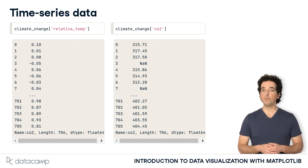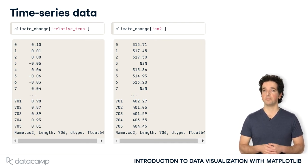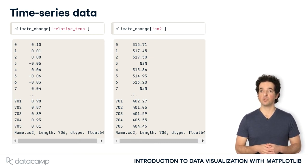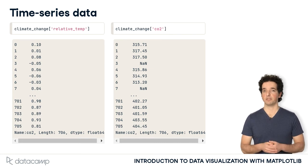There are a few points in the CO2 data that are stored as NaN, or not a number. These are missing values where measurements were not taken.